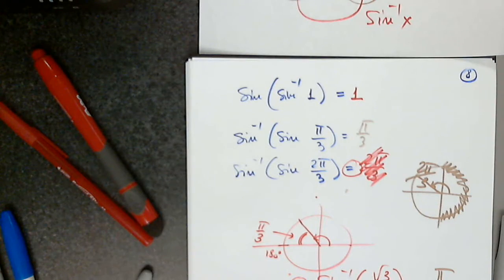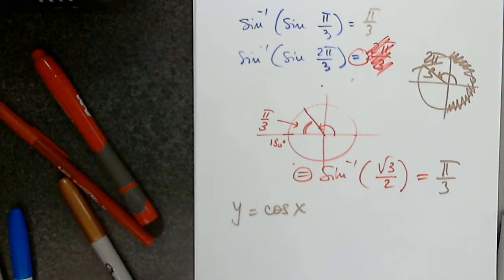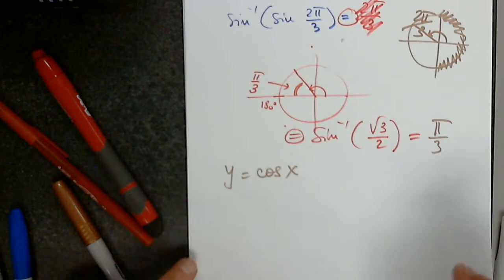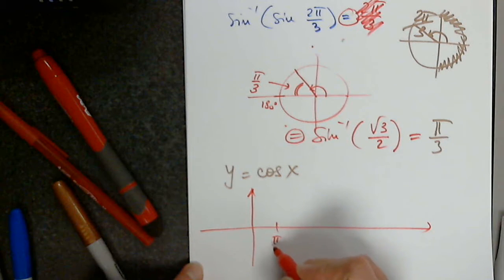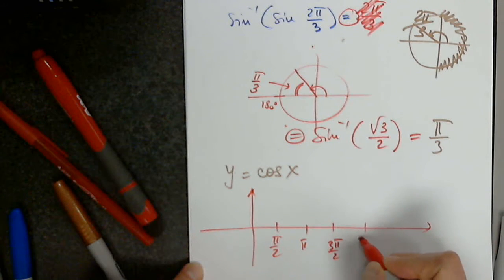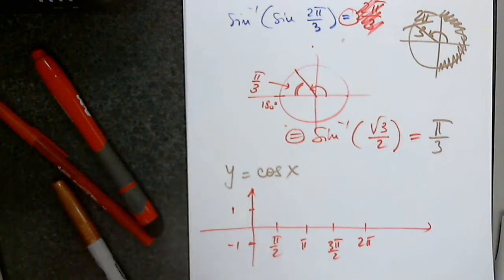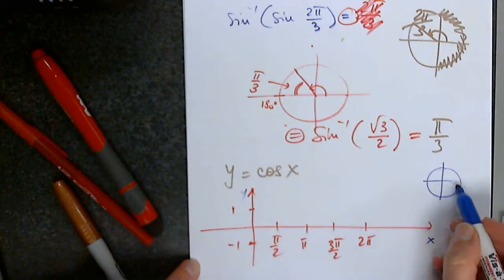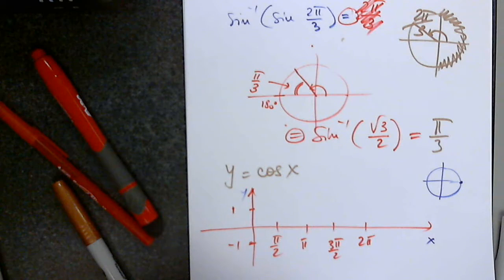Moving on to cosine. So y equals cosine x — everything is the same: phase shift, period, amplitude, and the interval. But the graph is different — it's basically a shifted sine. Let's start by hand: pi over 2, pi, 3 pi over 2, and 2 pi, with positive 1 and negative 1. Back to the unit circle — at 0 radians, the value of cosine is 1. Cosine is measured on the x-axis.